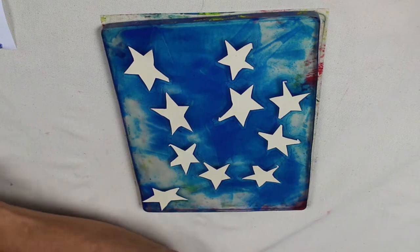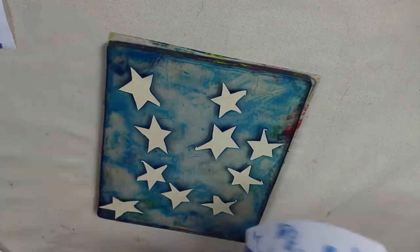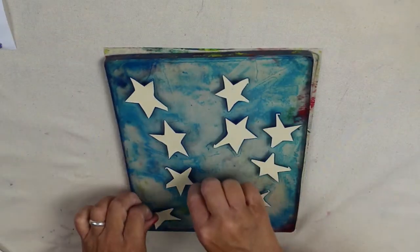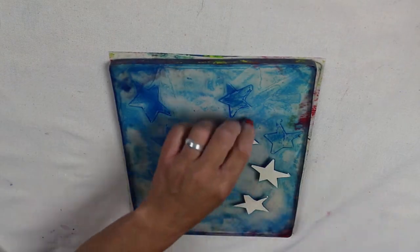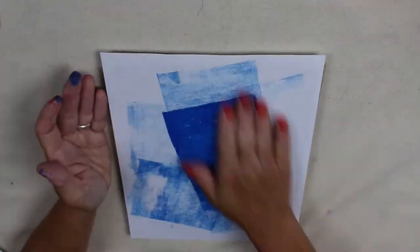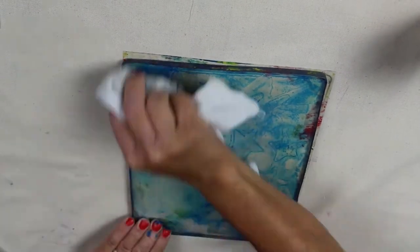We can use that leftover ink by making a ghost print. It will also help us clean off the remaining paint that's on the plate. Remove those stars. You can make another ghost print to remove some more paint, and then clean your plate just using some water and a rag.